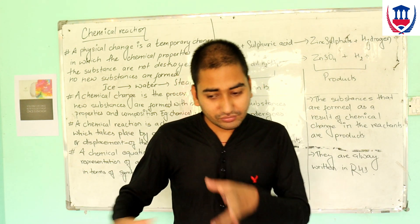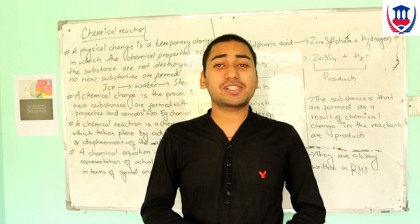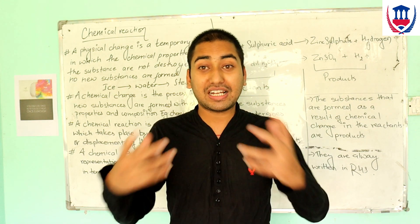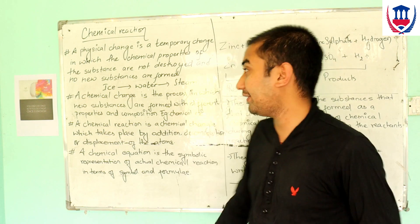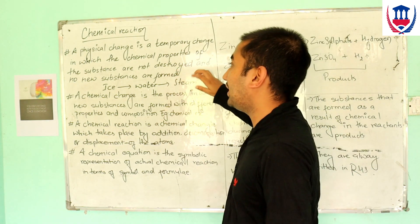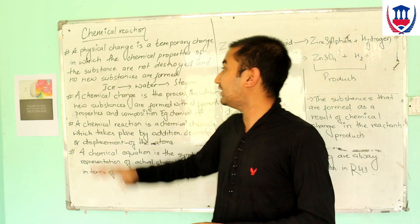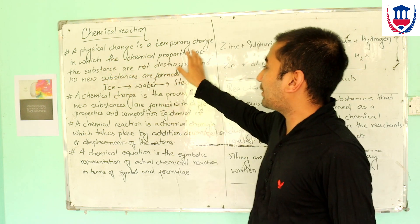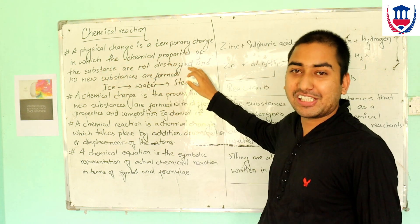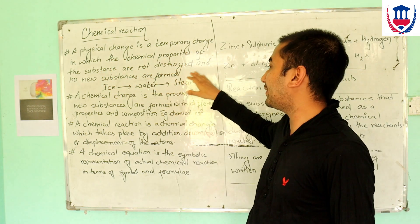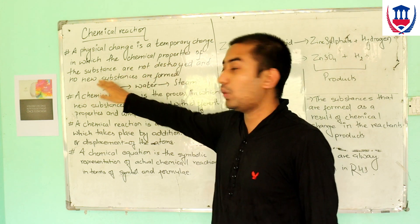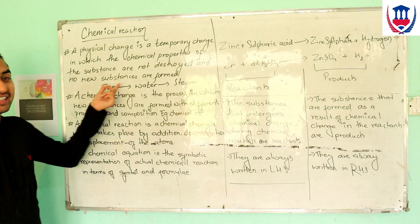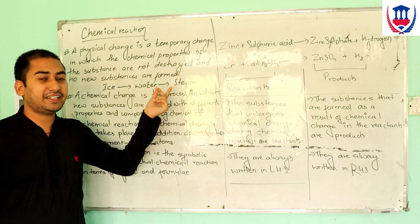So, chemical change is when the entire chemical composition changes and a new substance is formed. Physical change is the temporary change in which the chemical properties of the substance are not destroyed and no new substances are found. For example, ice changing to water, or water changing to steam.